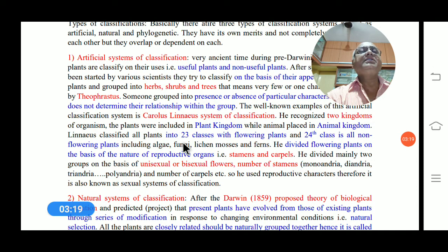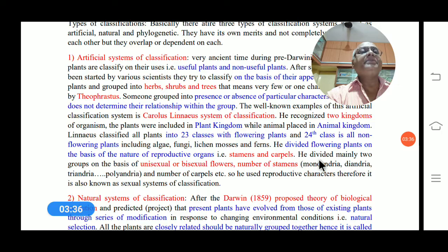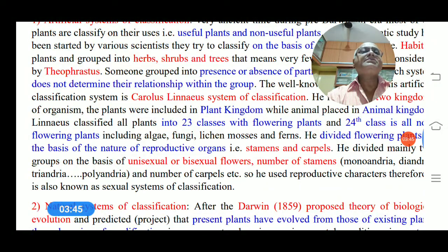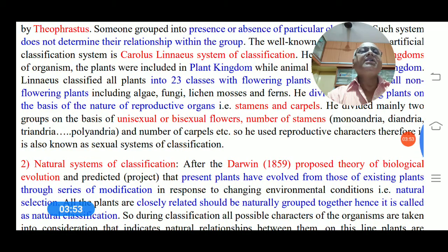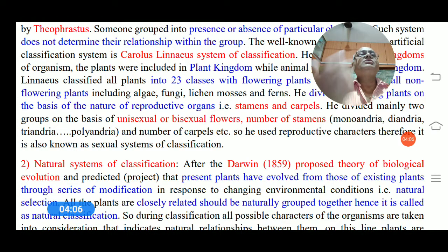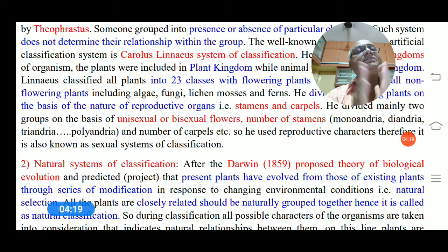Linnaeus separated all plants into 23 classes of flowering plants and a 24th class of non-flowering plants, including cryptogamic groups such as algae, fungi, mosses, and ferns. He divided flowering plants on the basis of reproductive organs — that is, stamens and carpels — into groups based on unisexual or bisexual flowers. Stamens were classified by number: monandria (one), diandria (two), triandria (three), up to polyandria. Because he used reproductive characters, it is also known as the sexual system of classification.